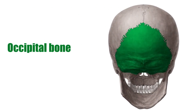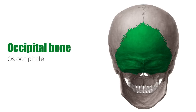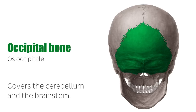The occipital bone is the most posterior superior bone of the neurocranium. It creates the rounded bob of the head at the nape of the neck and covers the cerebellum and brain stem in a bony capsule.